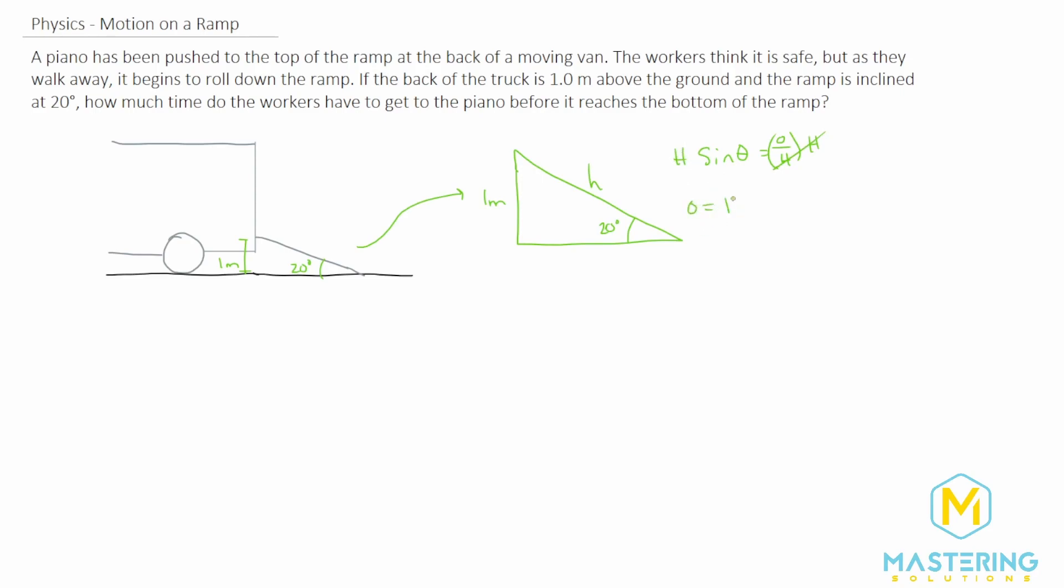So opposite is equal to H sine theta, and now we'll divide both sides of the equation by sine theta. So H, for hypotenuse, is equal to the opposite divided by sine of the angle theta. The opposite in this case is one meter, and we'll divide that by sine of 20 degrees.